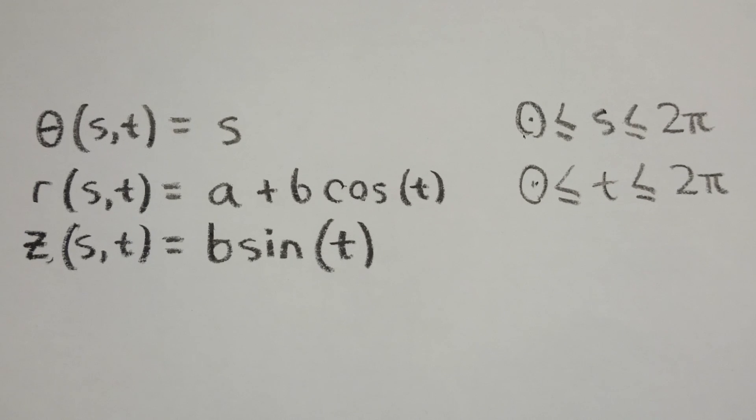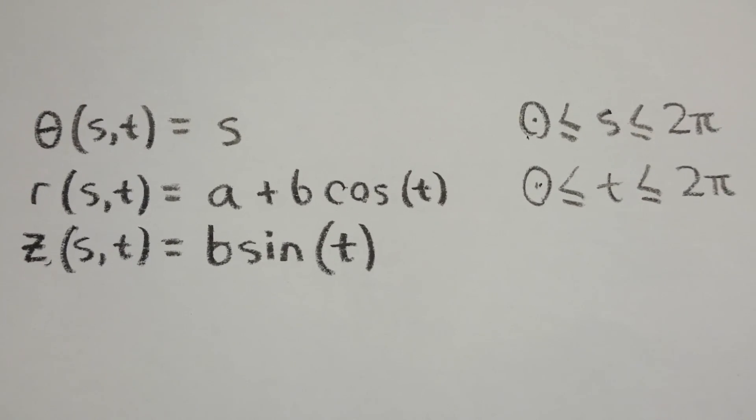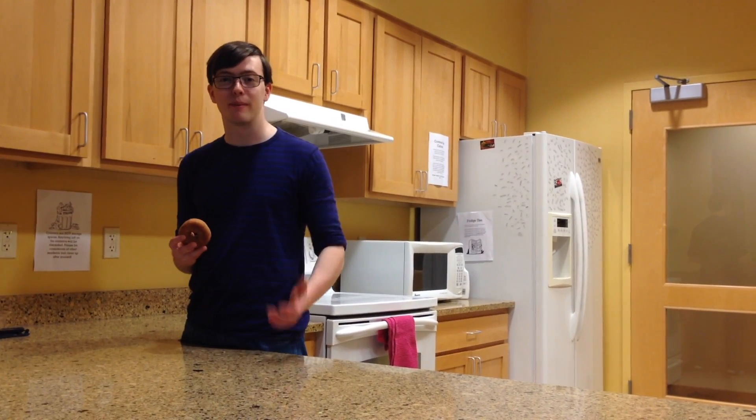The parameterization of our torus are these equations, with s and t going from 0 to 2π. So there we have it, we've just parameterized a torus.